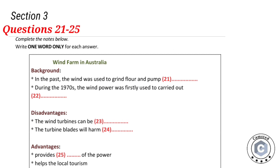Now turn to section 3. Section 3 — you will hear a student called Greg talking to his tutor about the study of a wind farm in Australia. First you have some time to look at questions 21 to 25. Now listen carefully and answer questions 21 to 25.